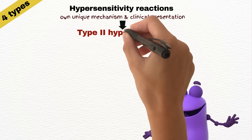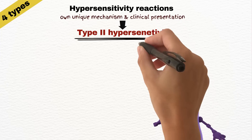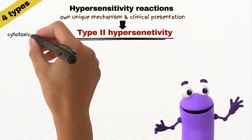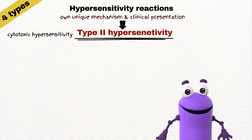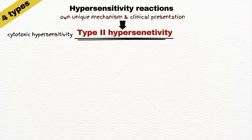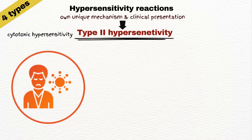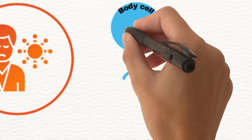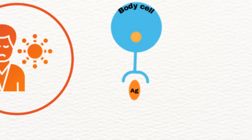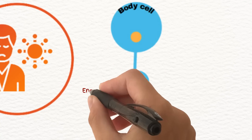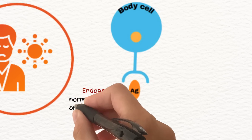Next is type 2 hypersensitivity, also known as cytotoxic hypersensitivity reactions. It occurs when the immune system mistakenly targets and destroys the body's own cells, tissues, or organs. The antigens involved are typically located on the surface of cells or extracellular matrix components and are usually endogenous, meaning they are normally present on the body's cells.